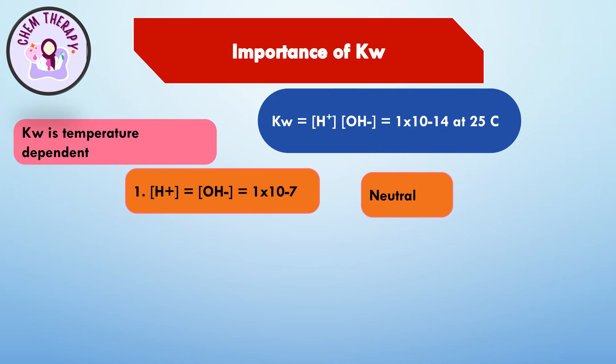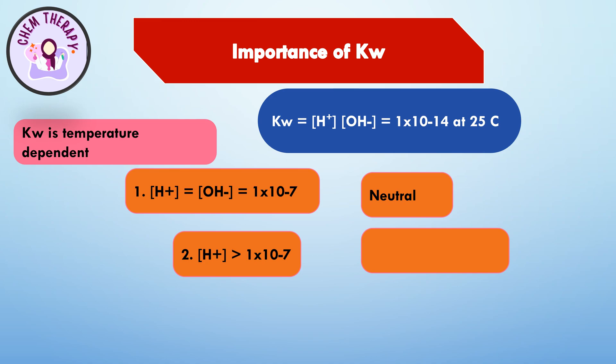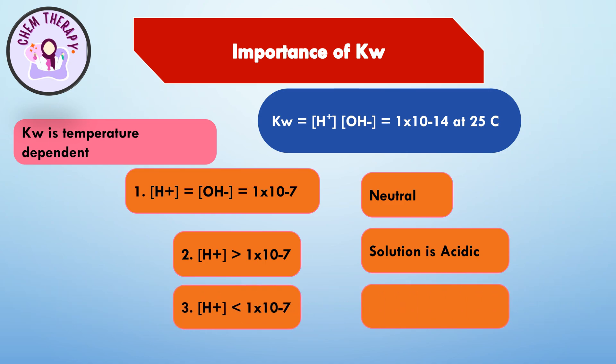If the concentration of hydrogen ions equals 1×10⁻⁷, the solution is neutral. If the concentration of hydrogen ions is greater than 1×10⁻⁷, the solution is acidic. And if the concentration of hydrogen ions is less than 1×10⁻⁷, the hydroxyl ion concentration would be greater and the solution would be basic.